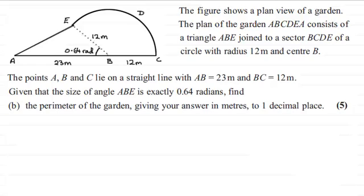Well first of all, I'm going to consider working out the length AE. We're missing that at the moment, and I can do that from triangle AEB just by using the cosine rule. I've got two sides to my triangle: 23 meters and 12 meters, and the included angle 0.64 radians.